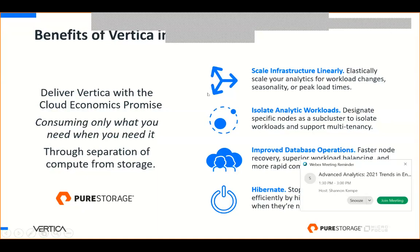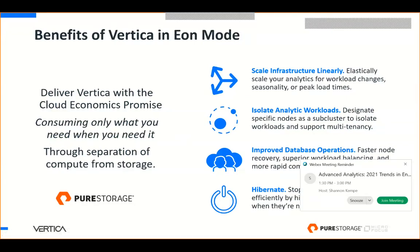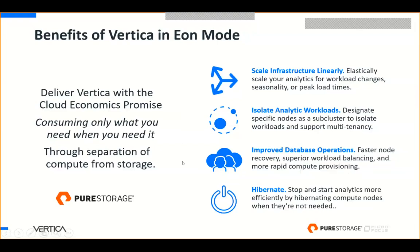Key benefits of Vertica's cloud-optimized architecture include scaling infrastructure linearly, isolating analytical workloads to support various groups — your data scientists working on machine learning projects, your BI team handling dashboards or executive-level performance reporting. You can improve database operations with faster recovery, and you can hibernate and restart analytics on demand. This whole idea is about a very versatile, flexible architecture.